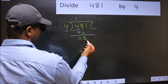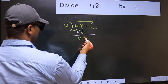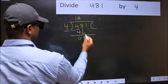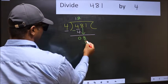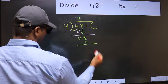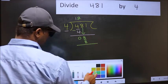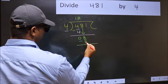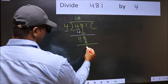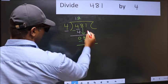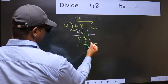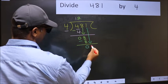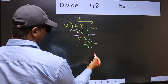Now 8. When do we get 8 in the 4 table? 4 twos are 8. Now you should subtract: 8 minus 8 is 0. After this, bring down the beside number. So 1 comes down.